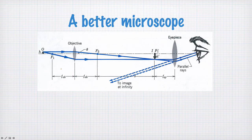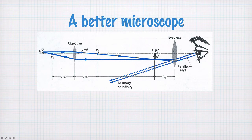This objective will form an image somewhere over here. We want it to form a real image, not a virtual image, so the real image is formed somewhere here. The second lens is called the eyepiece, and the strategy is to put this image from the objective at the focal length of the eyepiece, so that light from this image comes into the eyepiece and then is collimated and comes into your eyes parallel.